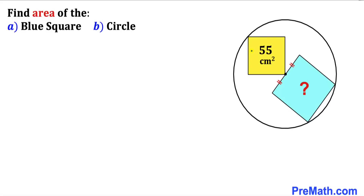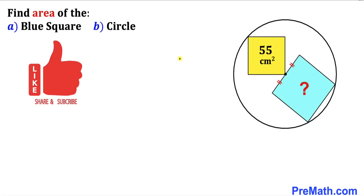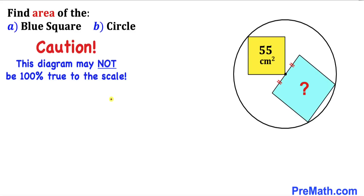Welcome to pre-math. In this video we have two squares confined in a circle. The area of the yellow square is 55 centimeter square, and we are going to calculate the area of the blue square as well as the area of the circle. Please don't forget to give a thumbs up and subscribe. Note that this figure may not be 100 percent true to scale.